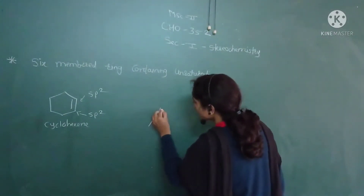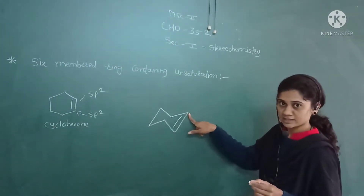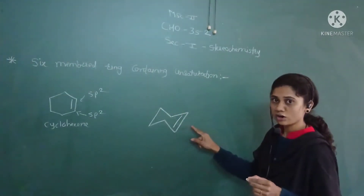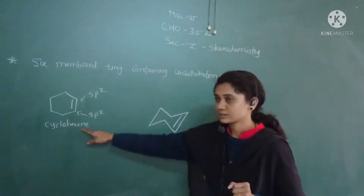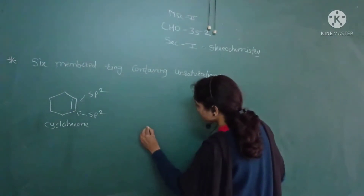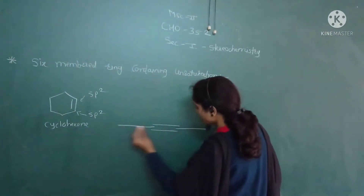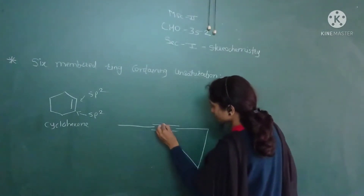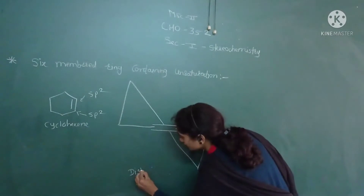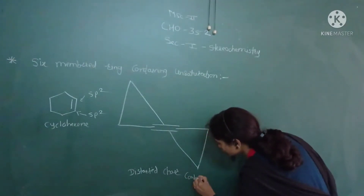If I draw the chair form of cyclohexene, there is presence of the carbon-carbon double bond where both carbons are sp2 hybridized. However, due to the presence of this double bond there is strain, so this is not a favorable structure. The chair conformation is not stable for cyclohexene.